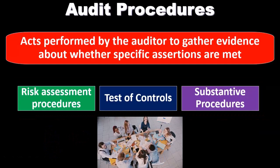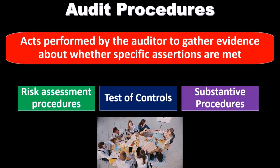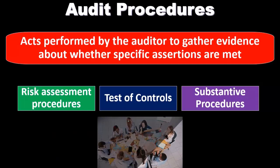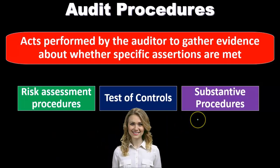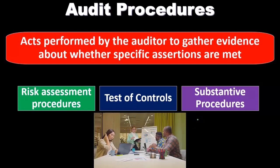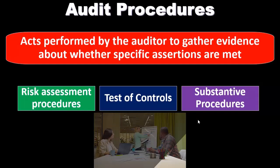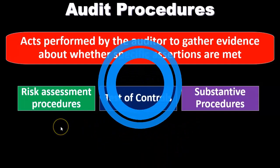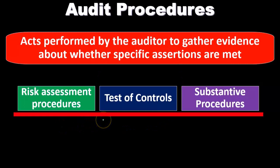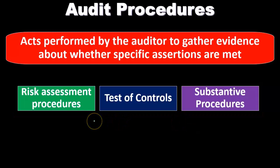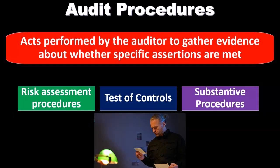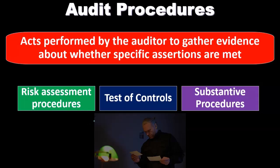We're going to have the risk assessment, then go through the test of controls — the bureaucracy, the process, the checks and balances that are in place — then move to the substantive tests. The substantive tests are the ones that would come to most people's minds. Before we get there, within the planning stage we have audit procedures related to the risk assessment, then the test of controls, which we must rely on to some degree especially for large publicly traded companies, and then the substantive tests, which we can hopefully limit by filling the bucket of evidence.